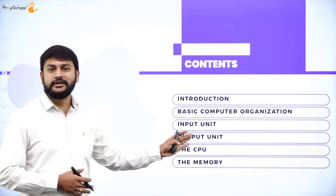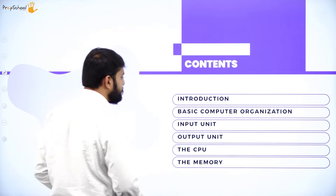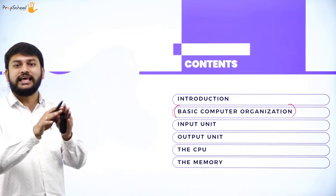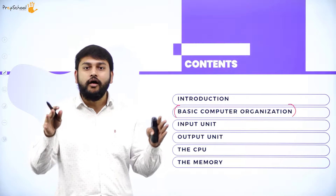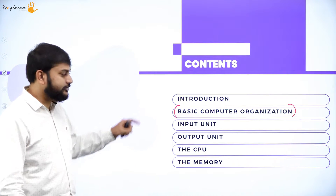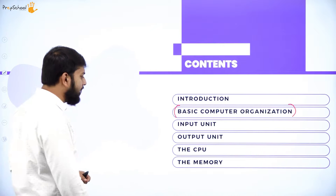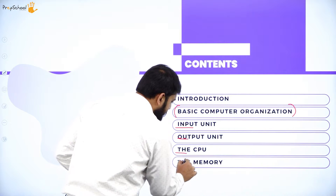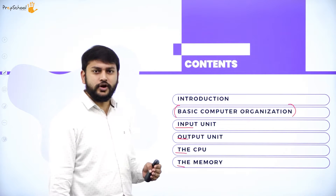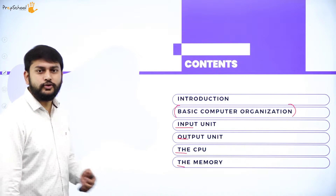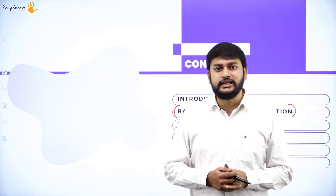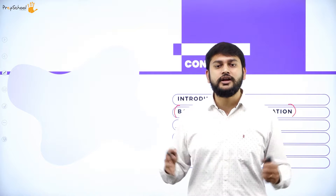This is what I will be discussing in this chapter. The first thing I would like to speak about is basic computer organization - how exactly, logically, all the components are connected. Then I will discuss each and every unit: input unit, output unit, the control unit (CPU), and the memory unit.